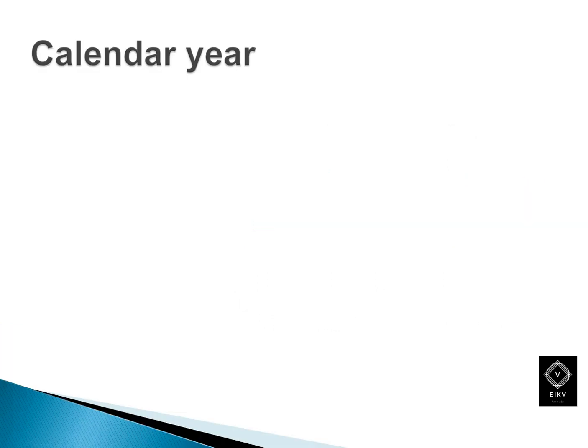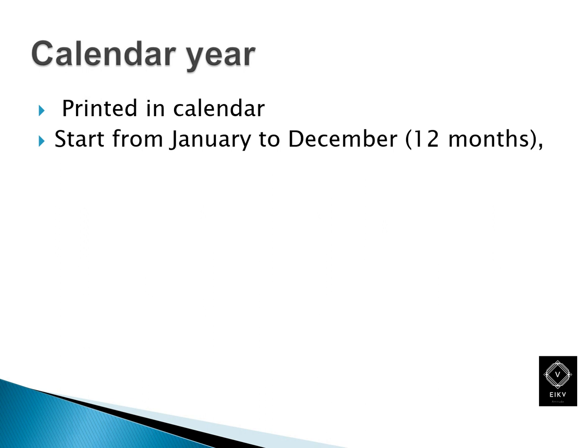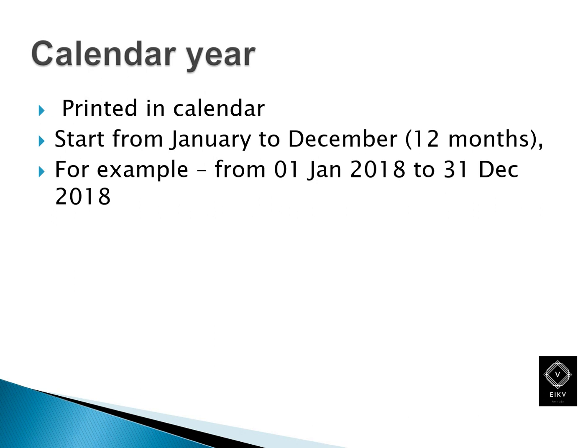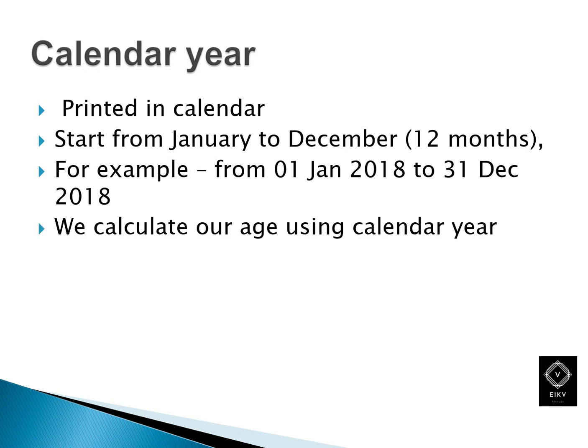The previous year is the first year. We have to understand the calendar year. The calendar year runs from January to December. For example, from 1st January to 31st December — that is the calendar year.